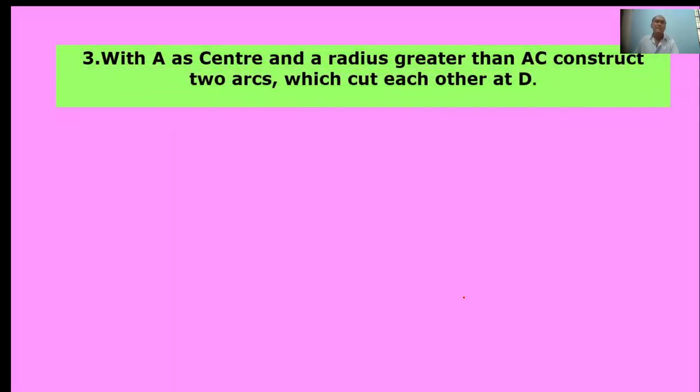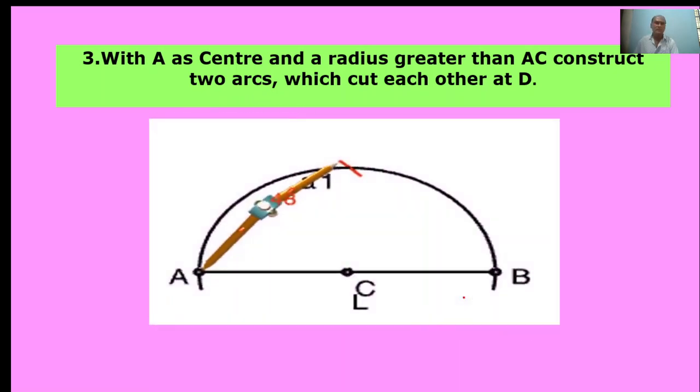With A as center and radius greater than AC, construct two arcs which cut each other at D. Here, A is the center. Take a radius more than AC length, draw an arc. This arc is called A1.